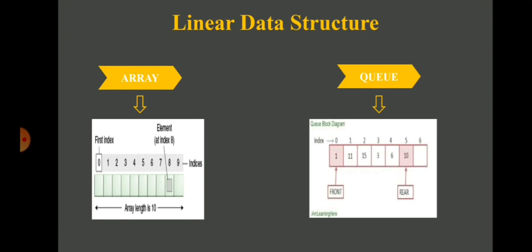In the linear data structure, there are four types: array, queue, stack, and linked list. First, we are going to see about array. An array is a finite, ordered collection of homogeneous data elements. In the figure of the array, you can see the first index. Index means all the elements in an array can be referenced by a subscript like a[i] or a of i. This subscript is known as an index. An index should always be an integer value. As each array element is identified by a subscript or index, an array element is also referred to as a subscripted or indexed variable.